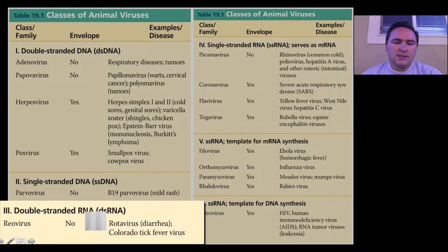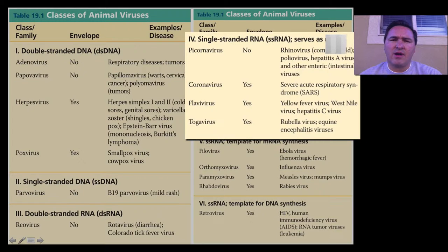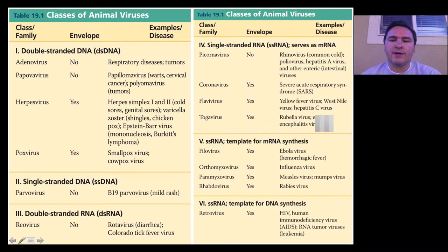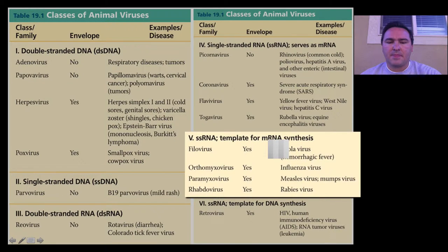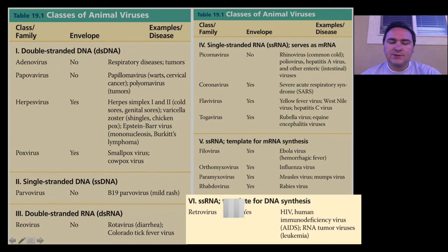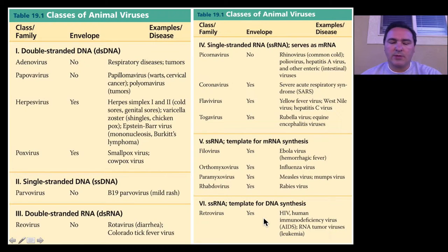You can also have double-stranded RNA, which is also different from what we've said before. You can have single-stranded RNA viruses where the RNA serves as messenger RNA only — things like the common cold viruses, SARS, yellow fever, rubella. Then you can have single-stranded RNA viruses that serve as a template for mRNA synthesis — things like the Ebola virus, influenza, and rabies. Or you can have single-stranded RNA viruses that then become a template for DNA synthesis, and HIV is one of these. That's the one we'll be looking at in more detail.